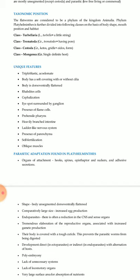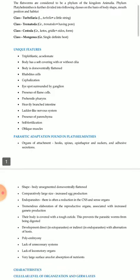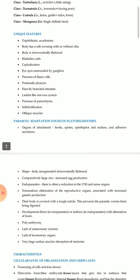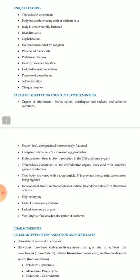Phylum Platyhelminthes is further divided into the following classes on the basis of body shapes, mouth position, and habitat: Class Turbellaria, Class Trematoda, Class Cestoda, and Class Monogenea. Turbellaria are free-living; Trematoda are parasitic having pores; Cestoda are grade organisms with firm single definite hosts; Monogenea are unique features triploblastic acoelomate.